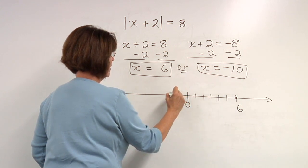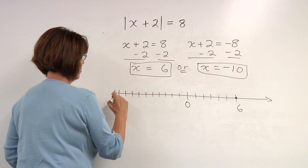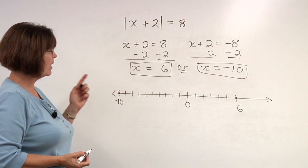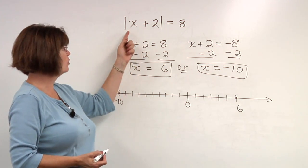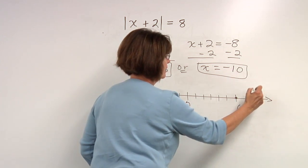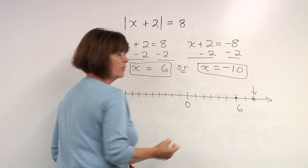x equals negative 10 would be over here on our number line. So if I'm looking at an x of 6 and I added 2 to that number, I would be here. And this is 8 units away from zero.